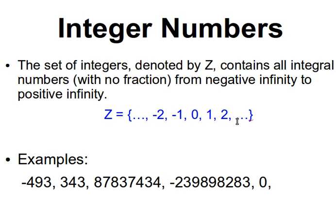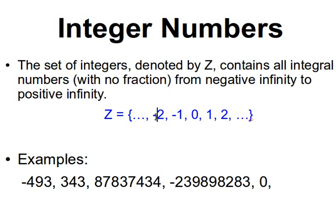Integers include one, two, three and so on, or minus one, minus two, minus three and so on. They are all the integral numbers with no fractions, from negative infinity to positive infinity. They include minus five billion, minus five thousand, minus one, zero, and upward. Usually they are denoted by Z — so Z is the set of integer numbers. Examples include minus 493, 343, and zero.